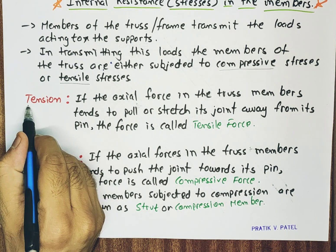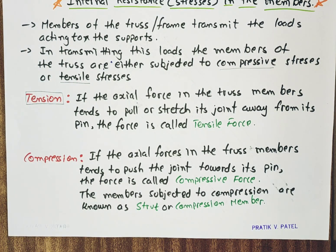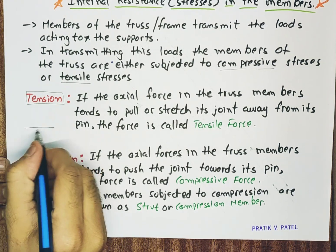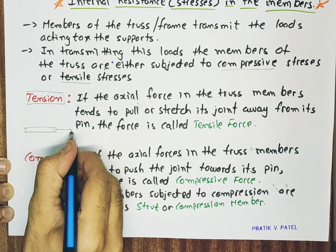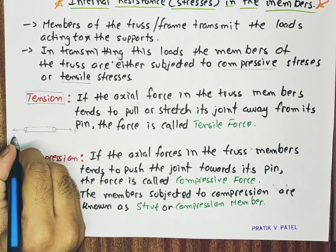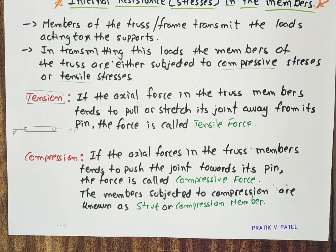First of all we will talk about tension force. If the axial force in the truss members tends to pull or stretch its joints away from its pin, the force is called tensile force. We can consider this as the member of the truss — here is the force P and another is the force P. This tends to pull the member, and so tensile stresses, or tensile forces, are developed in the member.